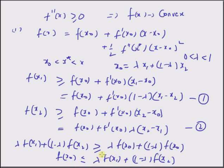This inequality is nothing but the definition of a convex function when x naught lies between x 1 and x 2. Hence, when a function has a non-negative second derivative, it implies that the function is a convex function. Now let us look at a more intuitive understanding of this theorem — that a positive second derivative basically means a convex function.